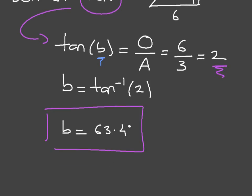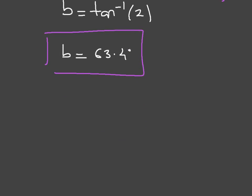As always, we complete our diagram. We had the right-angle triangle with this side length 6, this one 3, and we have just calculated this interior angle, which is 63.4 degrees.